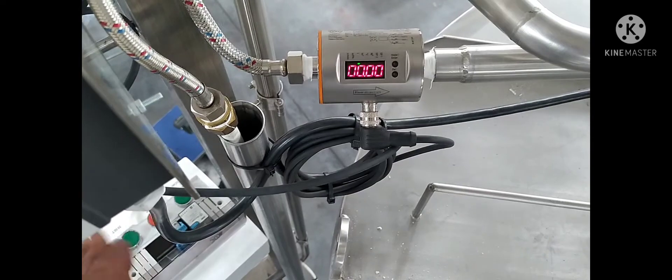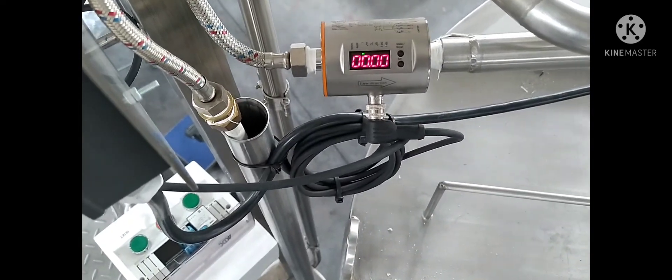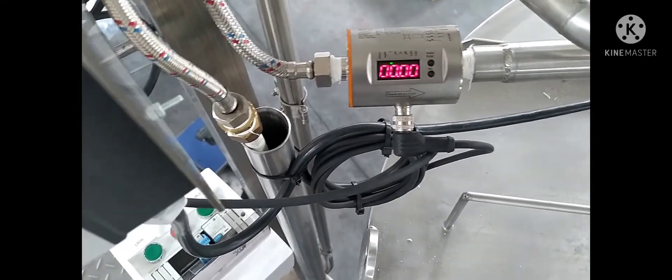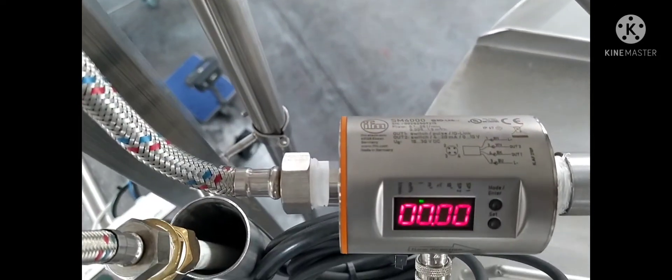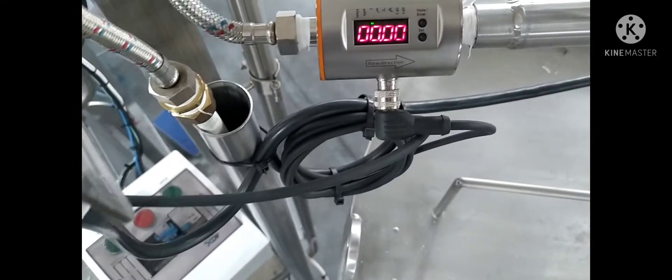Like that, there you go. You clear the value and then you're ready to fill in again. So this is an IFM flow meter SM6000, it's a good flow meter.